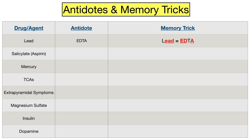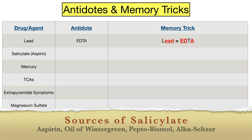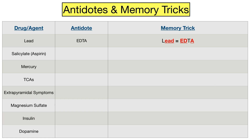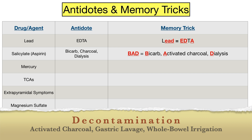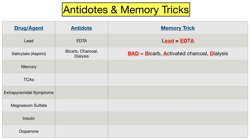Next we have salicylate toxicity. Sources of salicylate include aspirin, oil of wintergreen, Pepto-Bismol, and Alka-Seltzer. Management includes sodium bicarbonate, activated charcoal, and dialysis. The easy way to remember this is the mnemonic BAD — think of salicylate toxicity as being BAD. B for bicarbonate, which helps alkalinize the plasma and urine — remember that salicylate toxicity can cause metabolic acidosis. A for activated charcoal, as decontamination can be attempted especially early in presentation using activated charcoal, gastric lavage, or whole bowel irrigation. Be aware there are mixed reviews on morbidity, mortality, and overall benefits to some decontamination approaches.